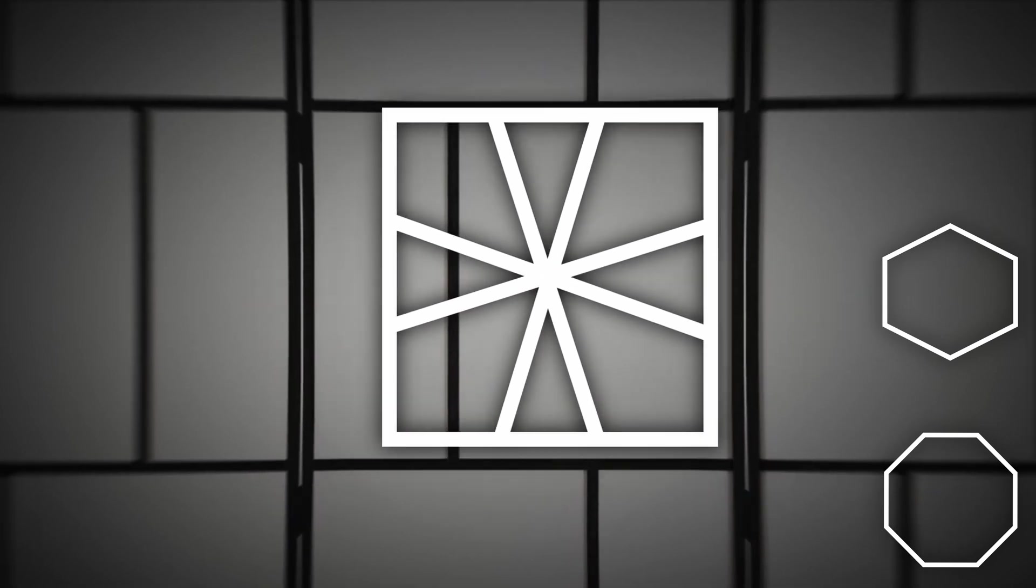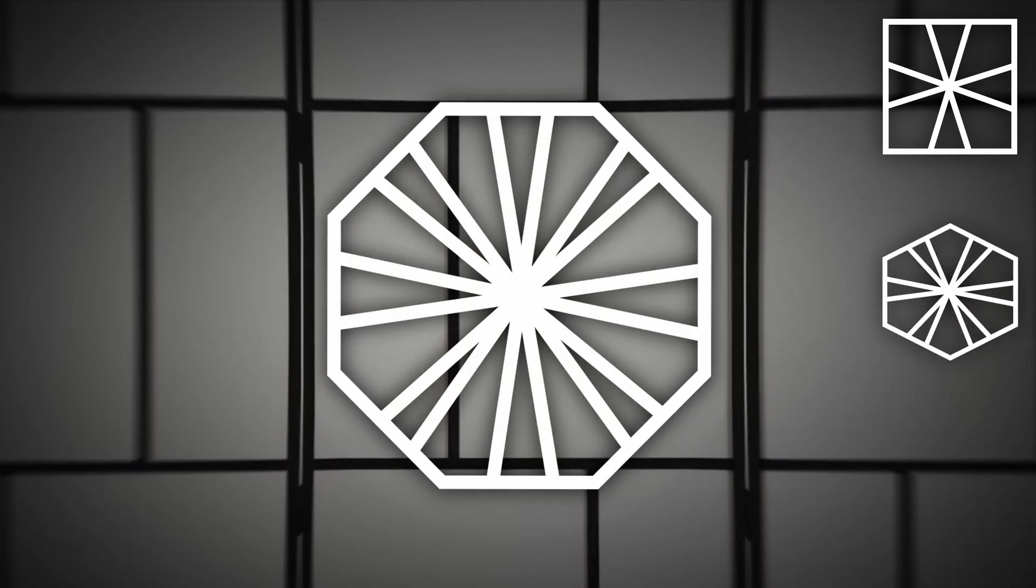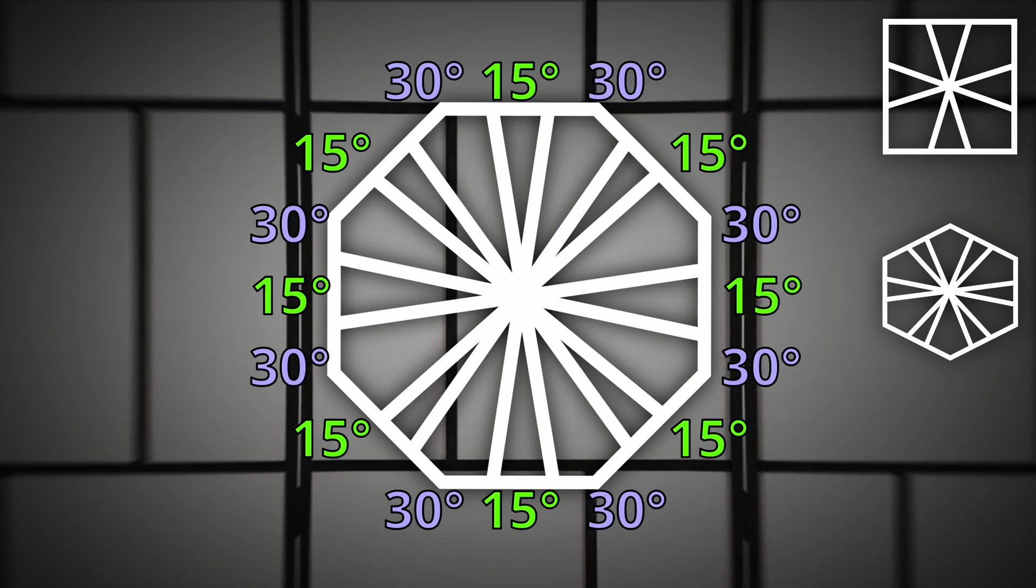So let's try applying these rules to a hexagon. We can have a hexagon with 20 degree edges and 40 degree corners. But we can go further. With an octagon, we have 15 degree edges and 30 degree corners.